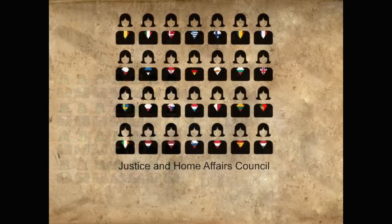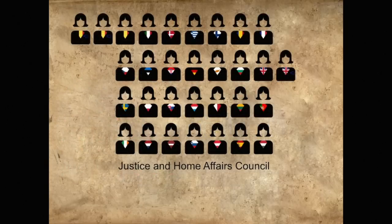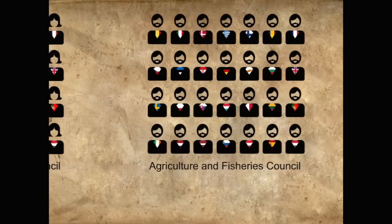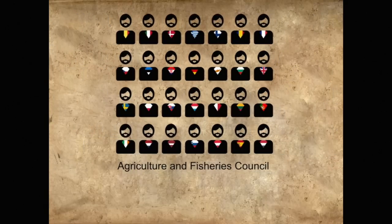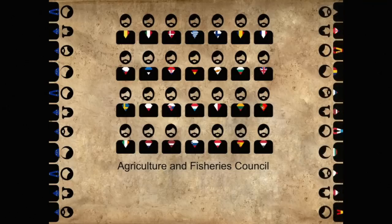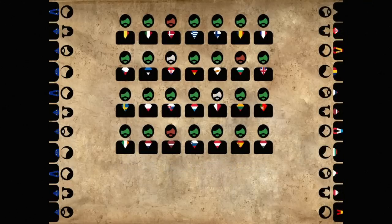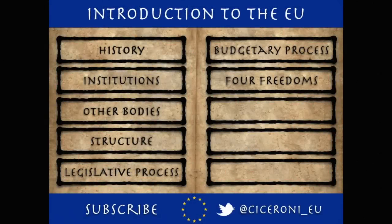The Council consists of usually 28, but sometimes more, national ministers, each working for and representing their own country. Depending on the topic discussed, the ministers making up the Council change. The ministers are supported both by EU and national civil servants. Just like Parliament, the Council votes on new laws as well as the EU budget. To find out more about the other institutions, the history of the EU and other subjects, please check out our playlists and subscribe to our channel.